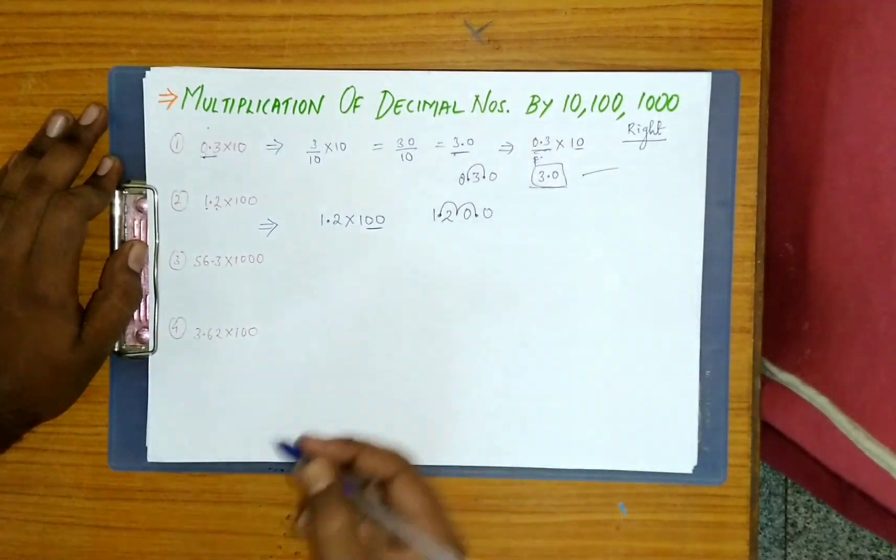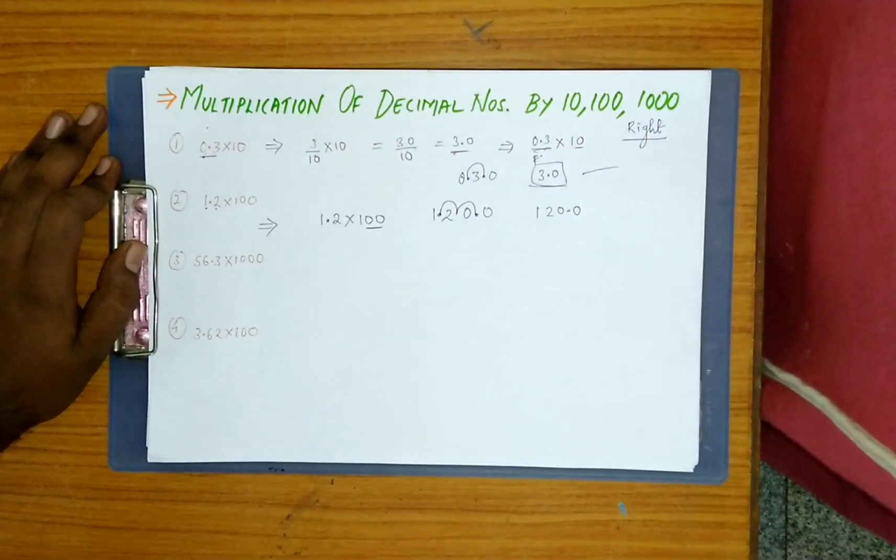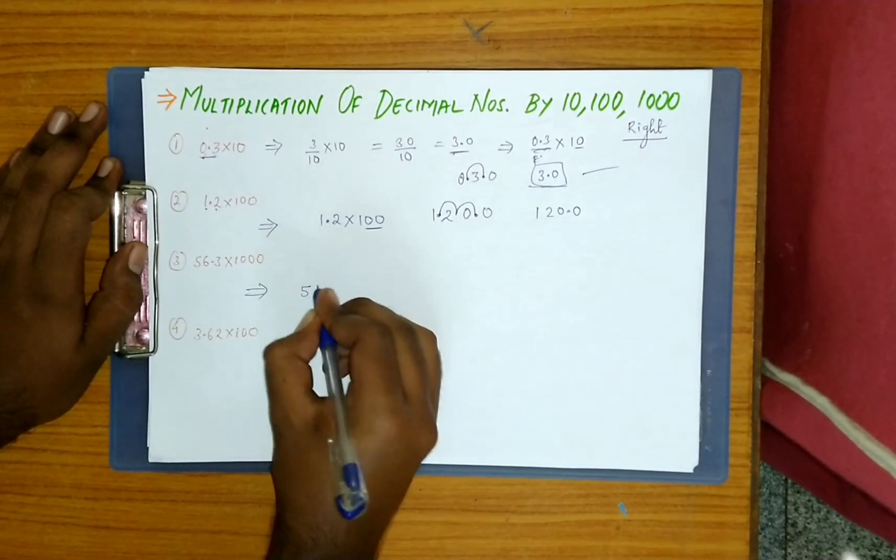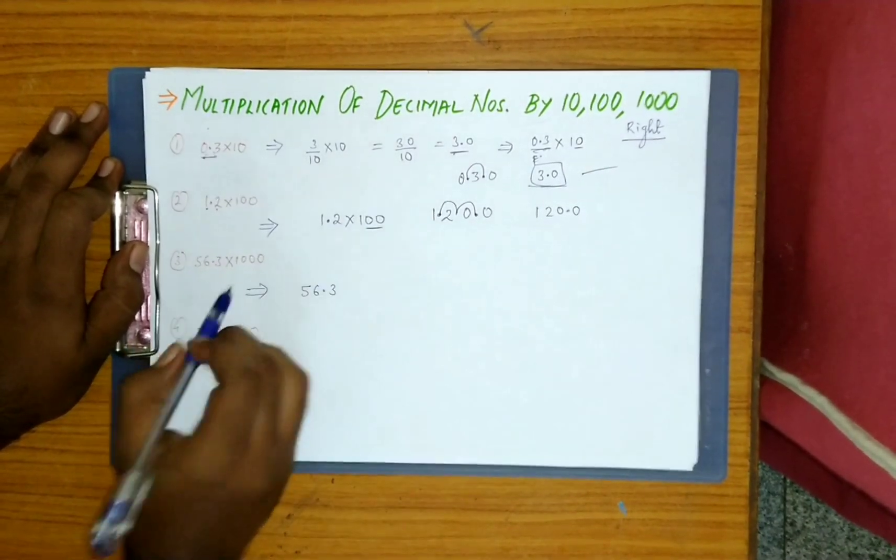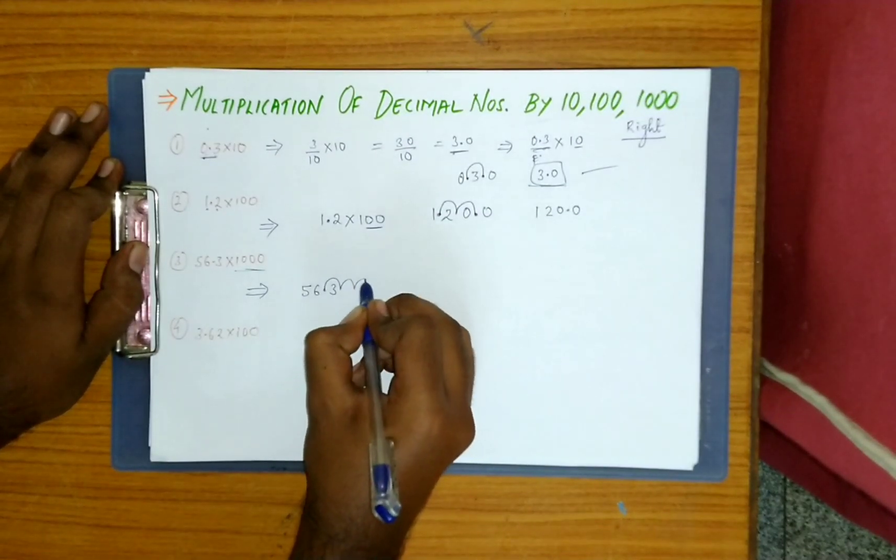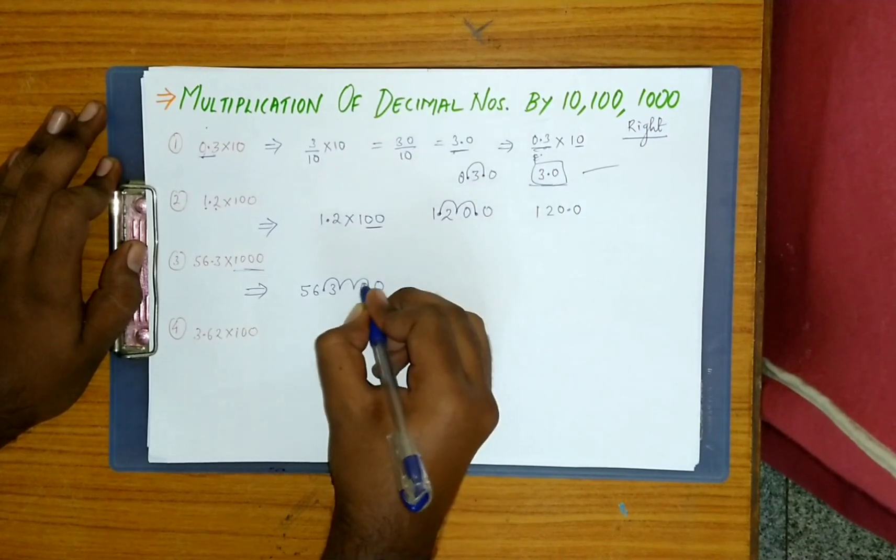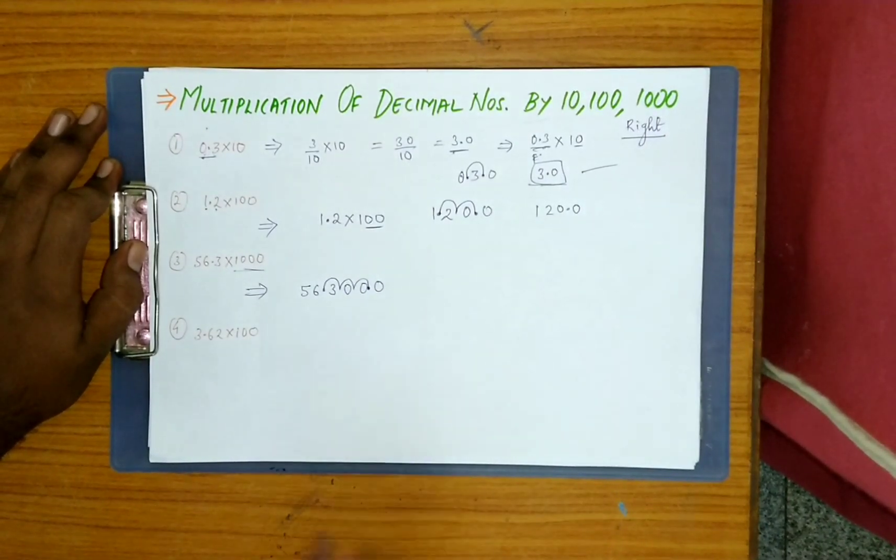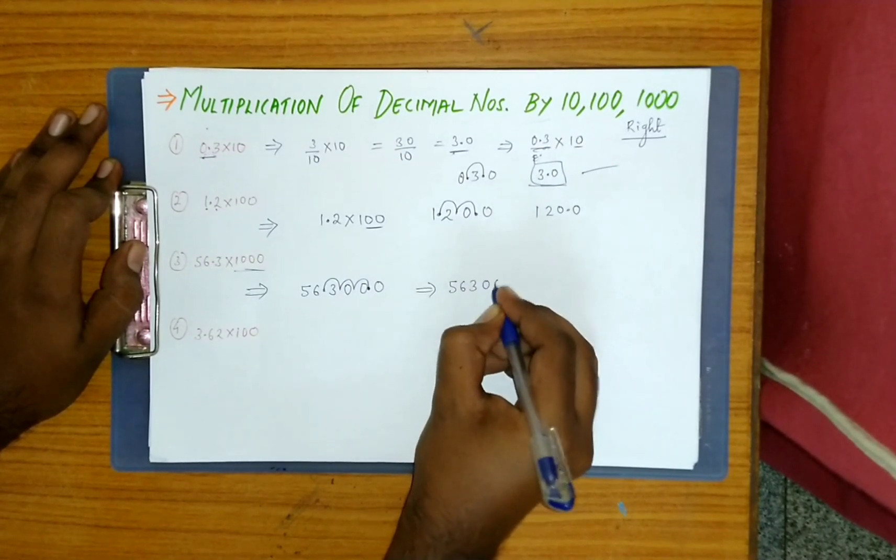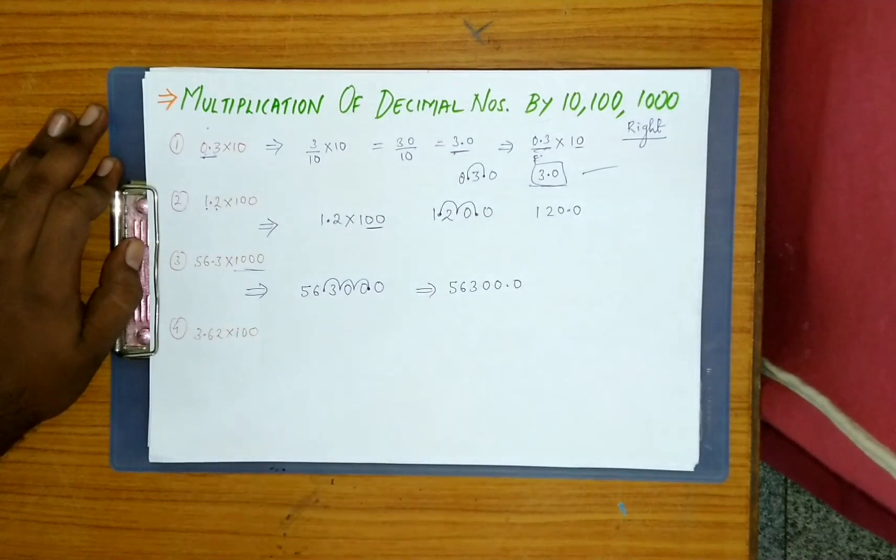Next question: 56.3 into 1000. Three zeros, so three times you have to jump: one, two, three. Point reaches here. Put zeros in the gap, you'll get 56300.0. In just one step we got the answer.